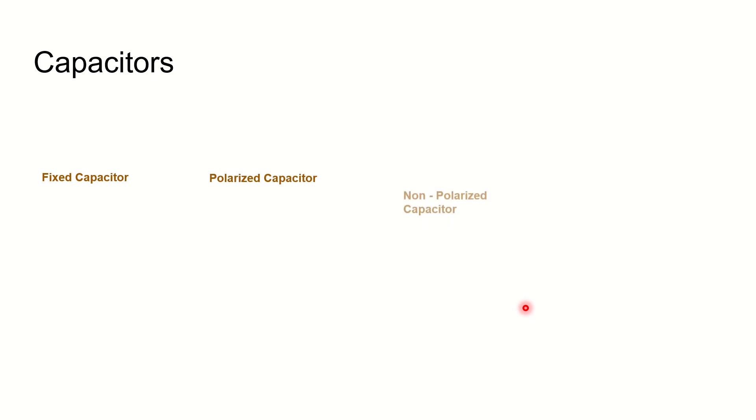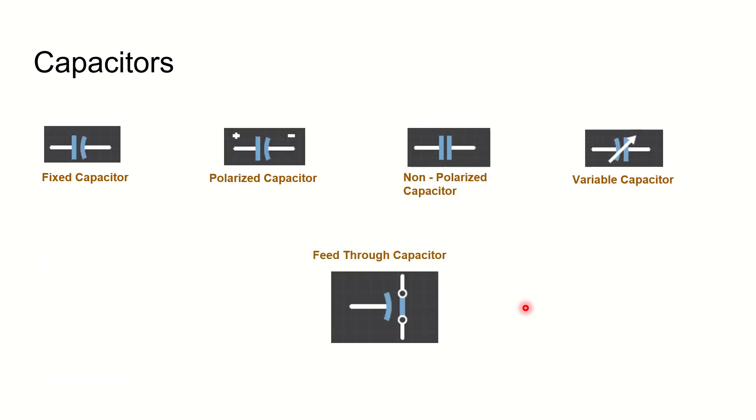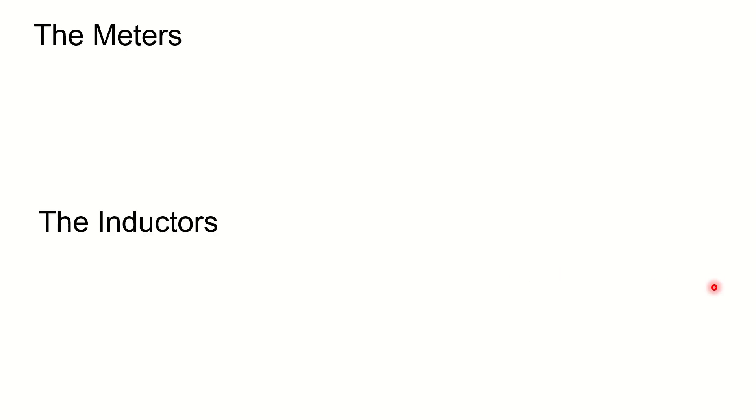Now capacitors is the next topic to be discussed. This is fixed capacitor - see the tilt here. Polarized capacitor will have plus and minus over there, tilt remains. Non-polarized is just straight bars. When you have an arrow with tilt in the first one, it is called a variable capacitor. And feed through capacitor is also available here.